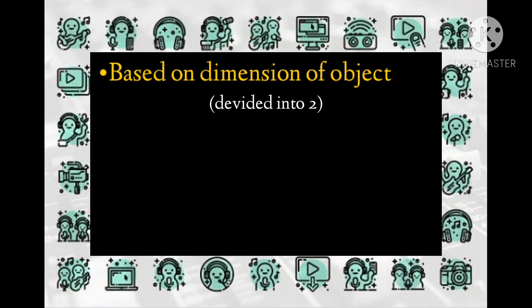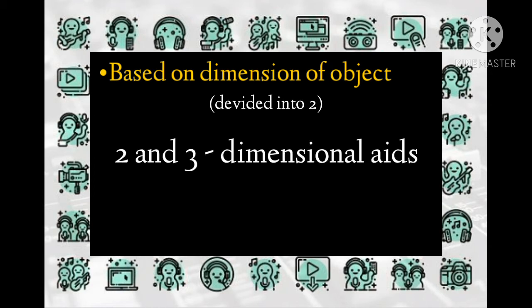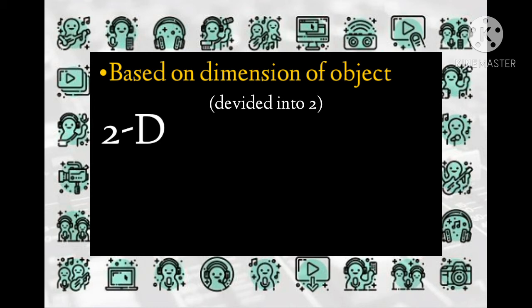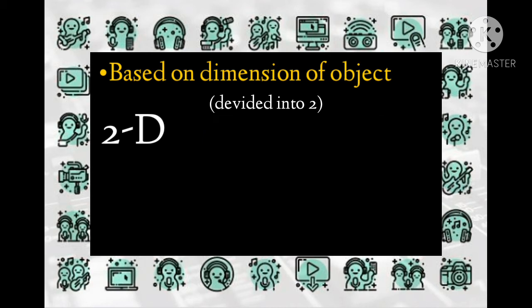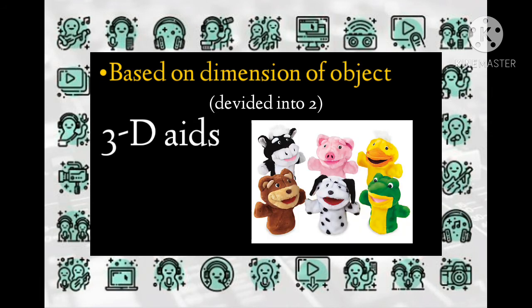Classification based on dimension of object: also divided into two types. Two-dimensional aids have only width and height visible; examples include charts, graphs, maps, pictographs, and boards of different types. Three-dimensional aids have all three dimensions — length, breadth, and height — visible; examples include models, globes, objects, mock-ups, specimens, and puppets.